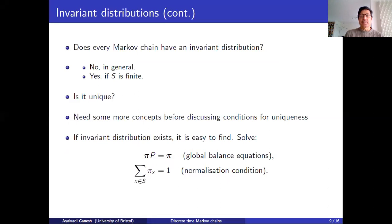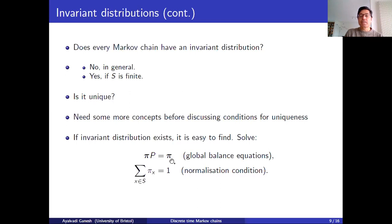We saw how to describe the time evolution of this chain. If it's a time-homogeneous Markov chain, then its evolution is completely described by a single matrix called the one-step transition probability matrix. Given this, you can work out all the joint distributions of the chain. Then we started looking at long-term behavior of Markov chains, and saw that if there is a probability distribution pi on the state space such that pi times P is pi — satisfying the global balance equations — then such a distribution is invariant, meaning that if the Markov chain is in distribution pi at time t, it remains in distribution pi forever.